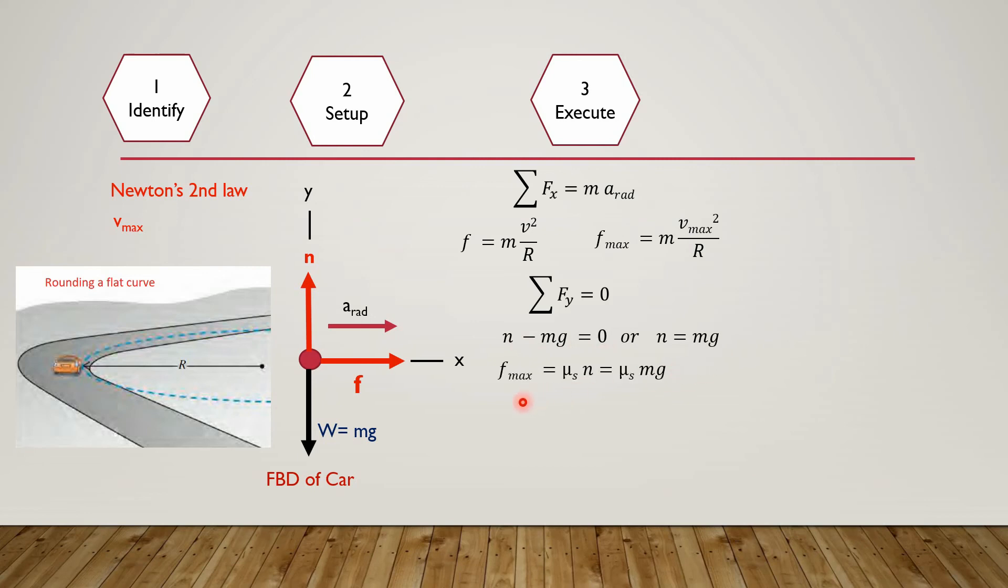Next, we know that f maximum equals mu s times n. Putting the value of n equals mg, we get f maximum equals mu s mg.